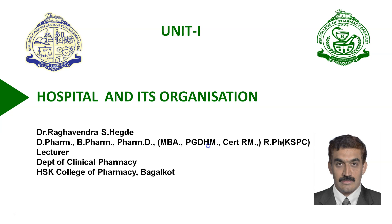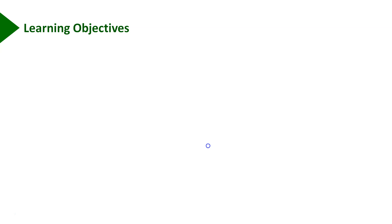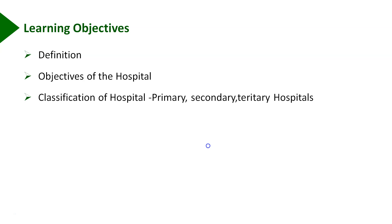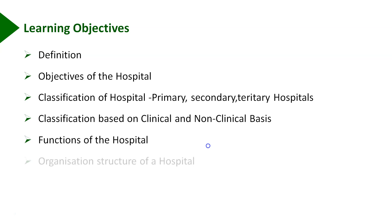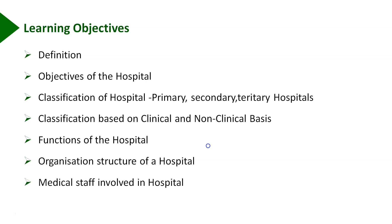Today let us understand the hospital and its organization. The learning objectives are: upon completion of this lecture session, you should be able to define and describe what is a hospital, objectives of the hospital, classification of hospital into primary, secondary and tertiary care hospitals, classification based on clinical and non-clinical basis, functions of the hospital, organization and structure of the hospital, and lastly the medical staff involved in the hospital for providing patient care.